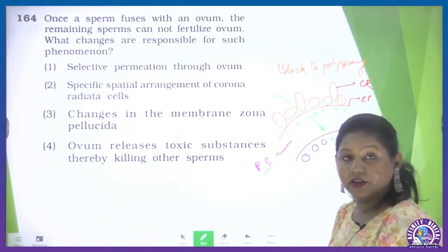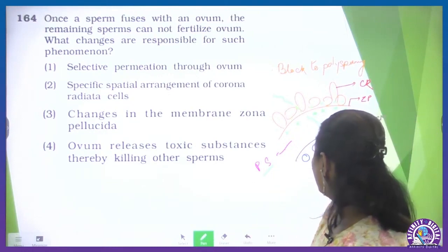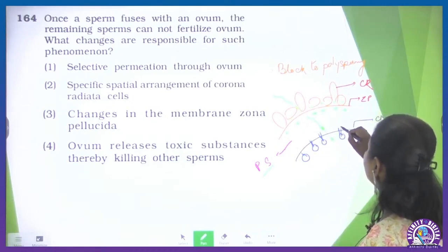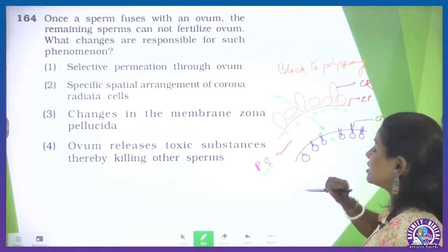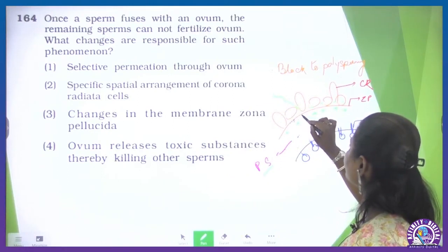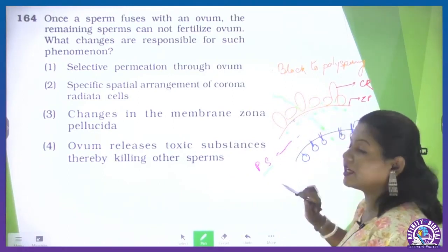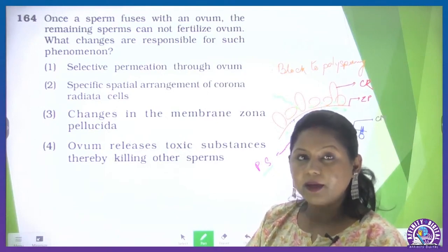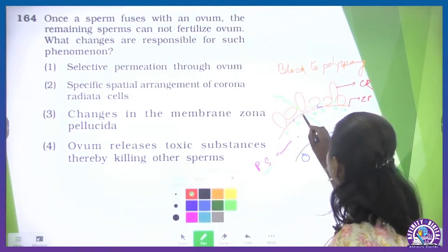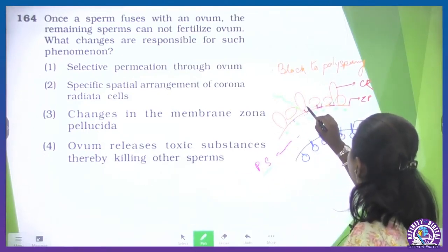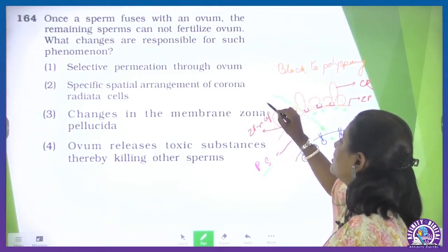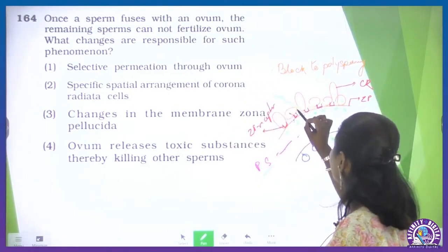A process called cortical reaction occurs. There are cortical granules in the periphery of the cell membrane, and their exocytosis takes place. When the contents come into the perivitelline space, they react with the zona pellucida. This is quite a long process. The sperm receptor in the zona pellucida — the ZP receptor — becomes damaged. Now the sperm can no longer gain further entry.